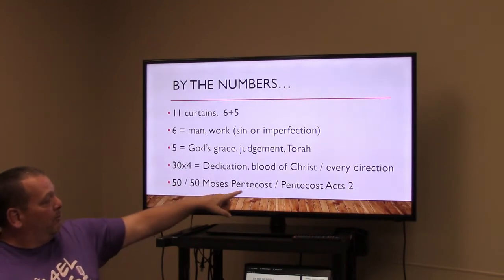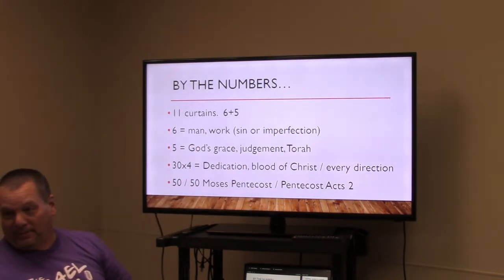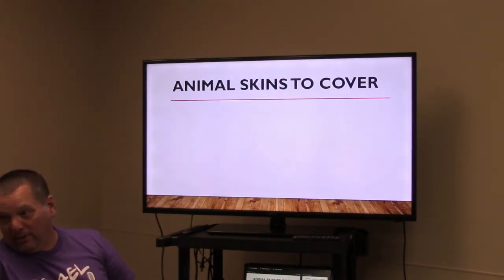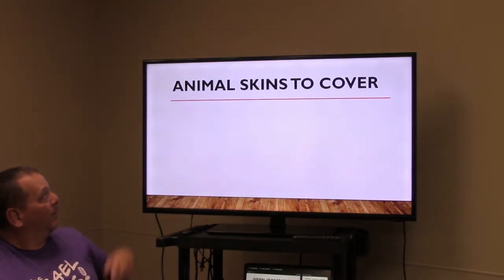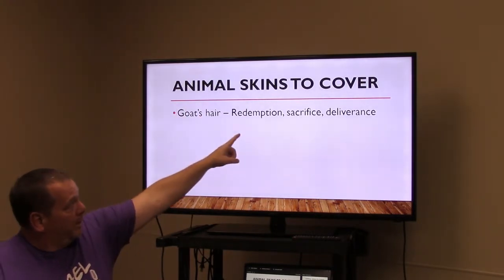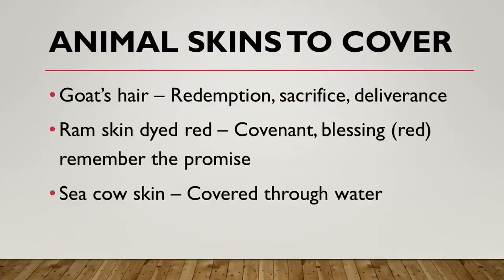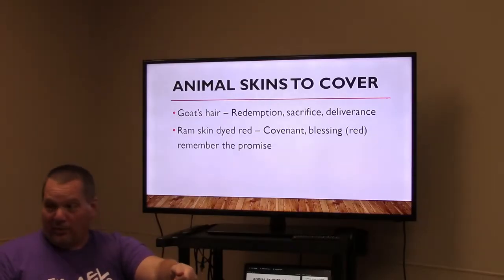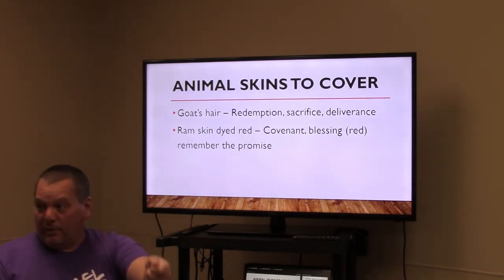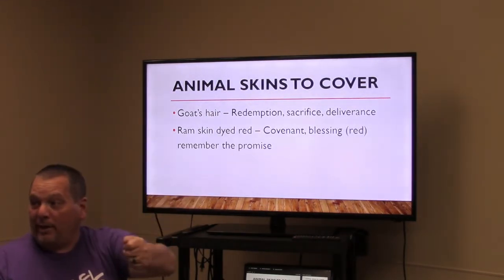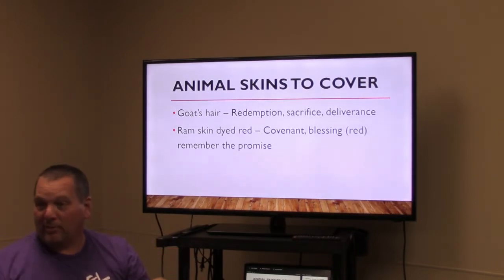The 50 and 50 represent Moses's Pentecost and Acts chapter 2 Pentecost. The goat skins represent redemption, sacrifice, and deliverance. The ram skin dyed red represents covenant blessing and the promise of blood sacrifice — like a credit card that covers but the debt wasn't yet paid. One day that debt would be paid by the Messiah's blood.